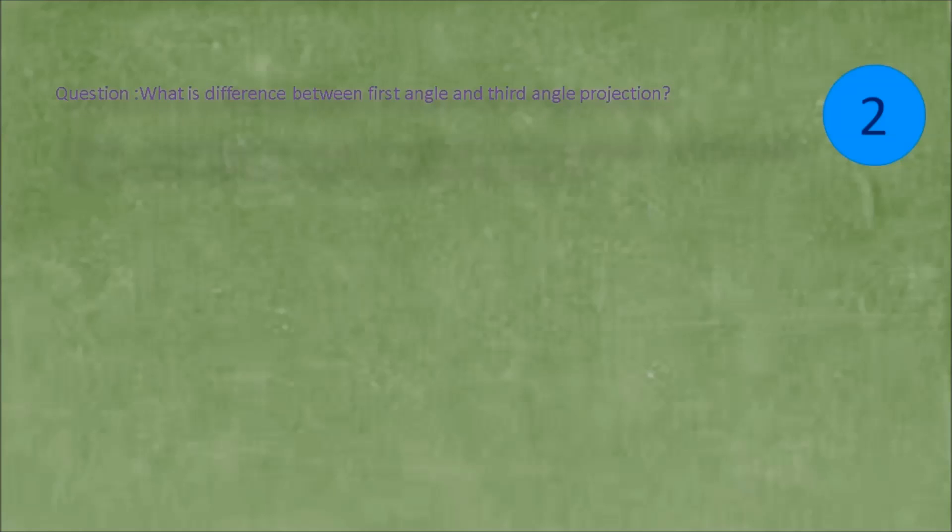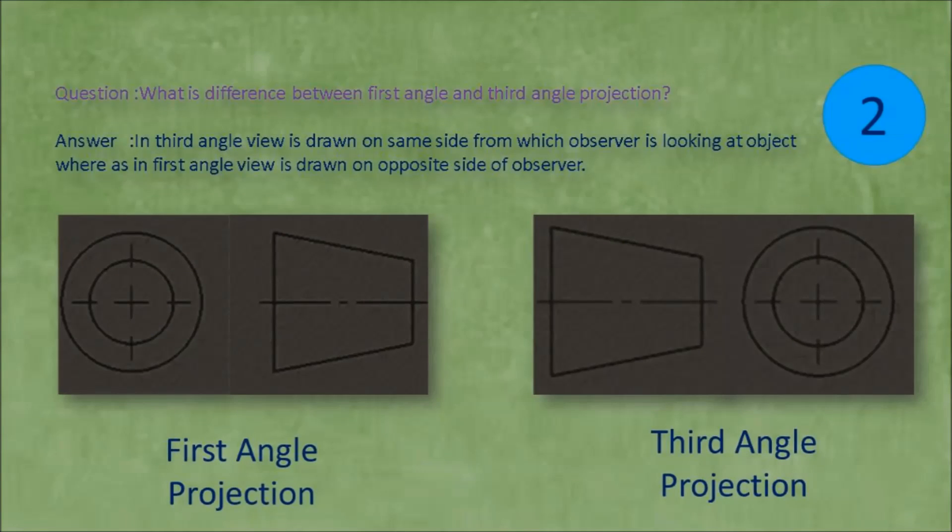Question: What is difference between first angle and third angle projection? Answer: In third angle projection, the view is drawn on same side from which observer is looking at object, whereas in first angle projection, the view is drawn on opposite side of observer.